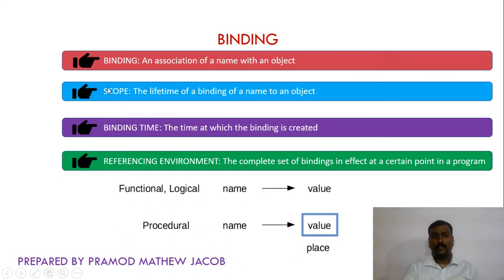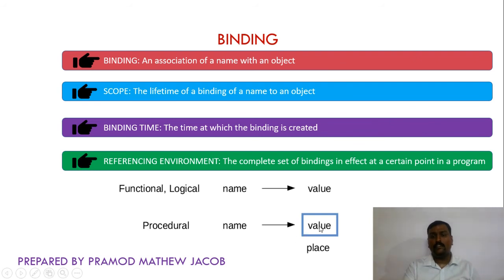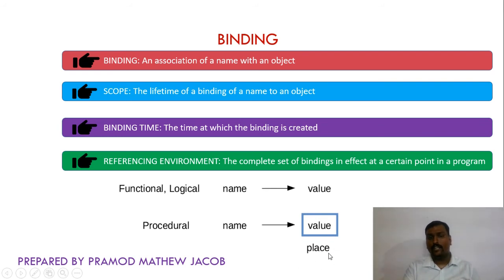In functional and logical programming languages, a name can be bound with a value. In procedural languages like C and Java, the name can be bound with a value and the memory address can be mapped with that value. So we can access a particular value either using the name or using the address of that particular variable.